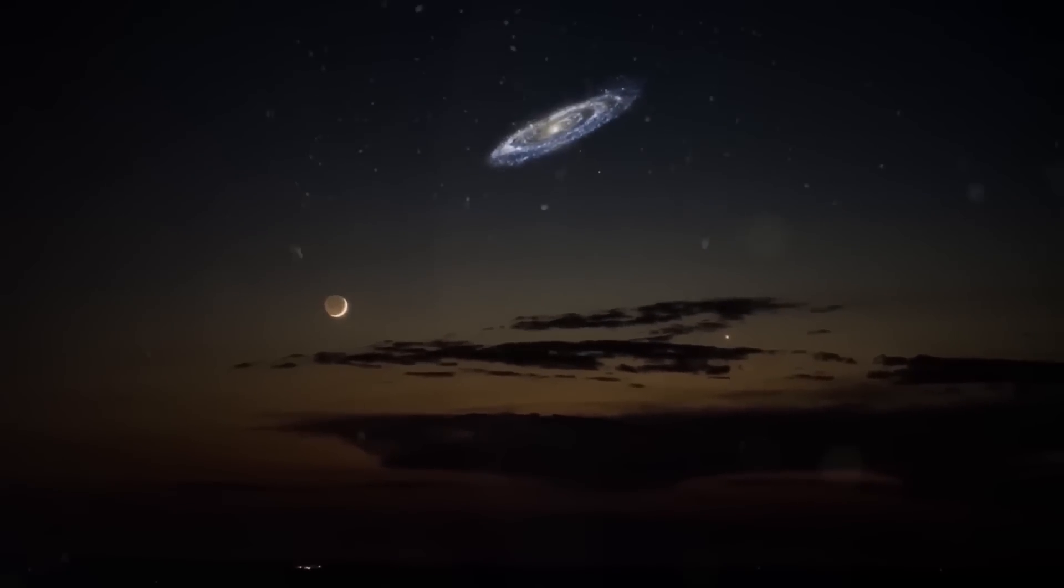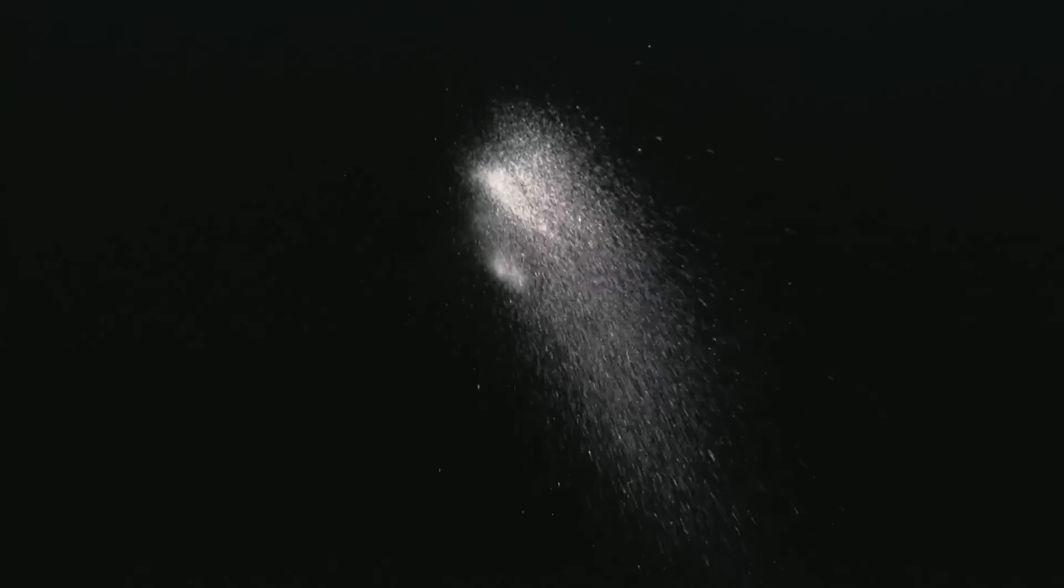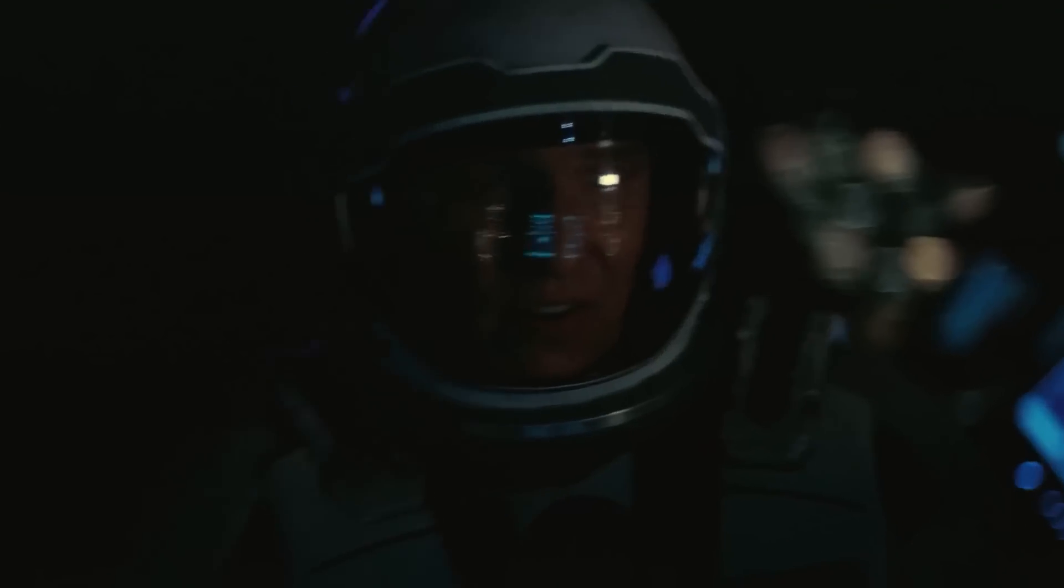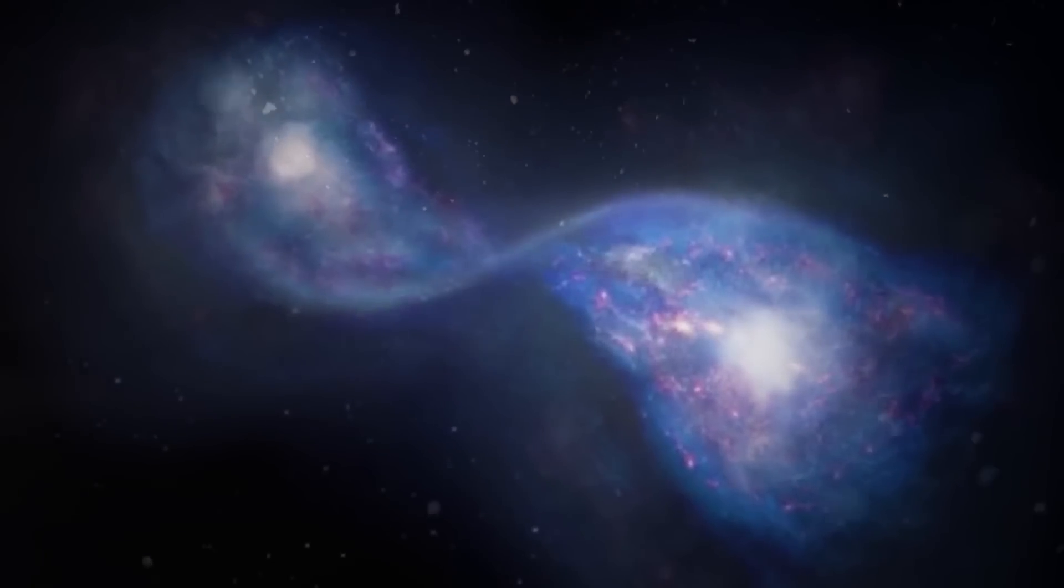The Andromeda galaxy, the Milky Way's nearest neighbor, is the furthest object in the sky that can be seen without a telescope. Although the galaxy is a stunning spiral, you may not be aware of one crucial fact. Andromeda is traveling in our direction and is likely to collide with the Milky Way sooner than expected.